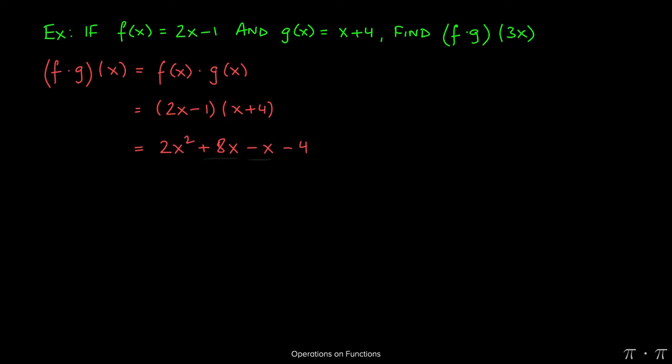At this stage, we can combine like terms. The only two terms that are alike are the middle ones that have x's in them. 8x minus x will give us 7x. The other two terms just come along for the ride. Nothing changes with them. So what we've found is that f times g of x is 2x squared plus 7x minus 4.